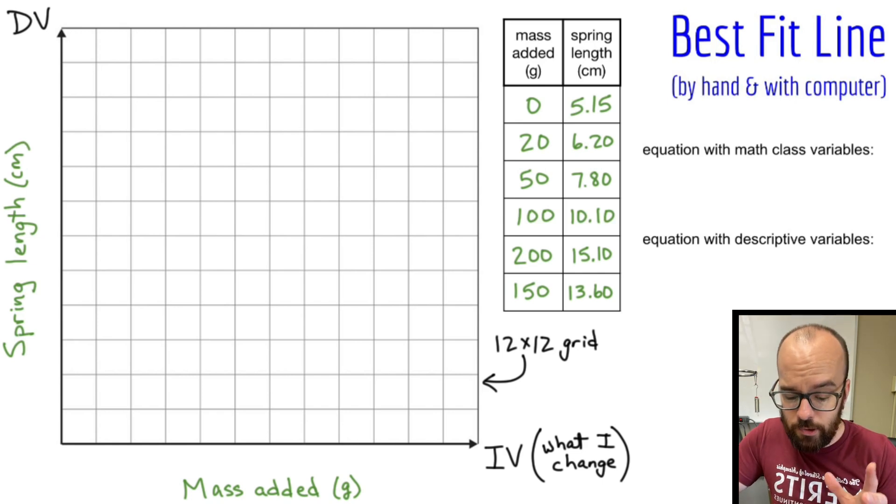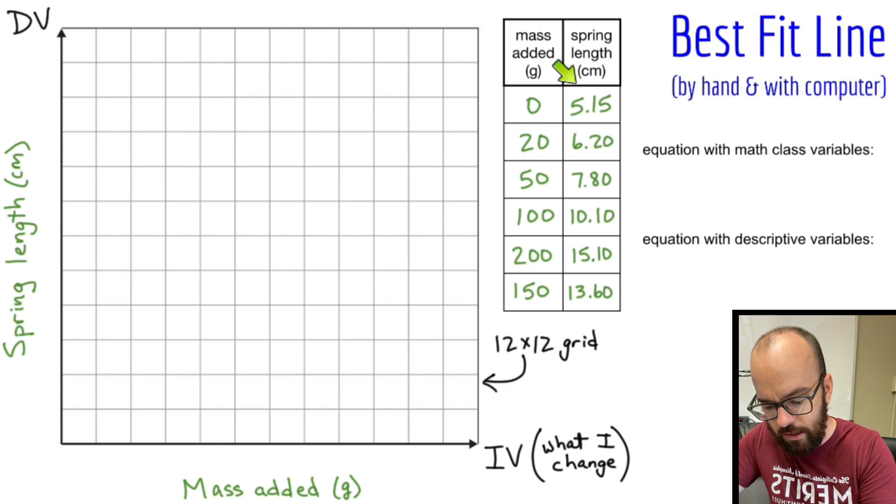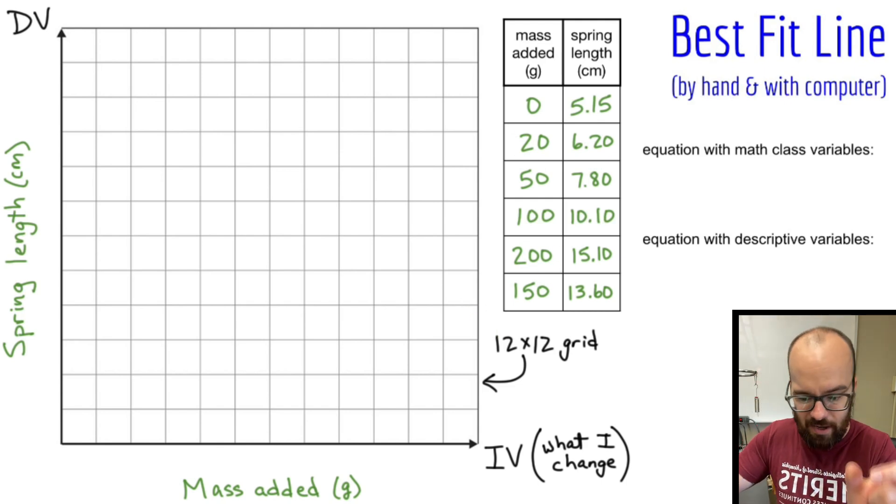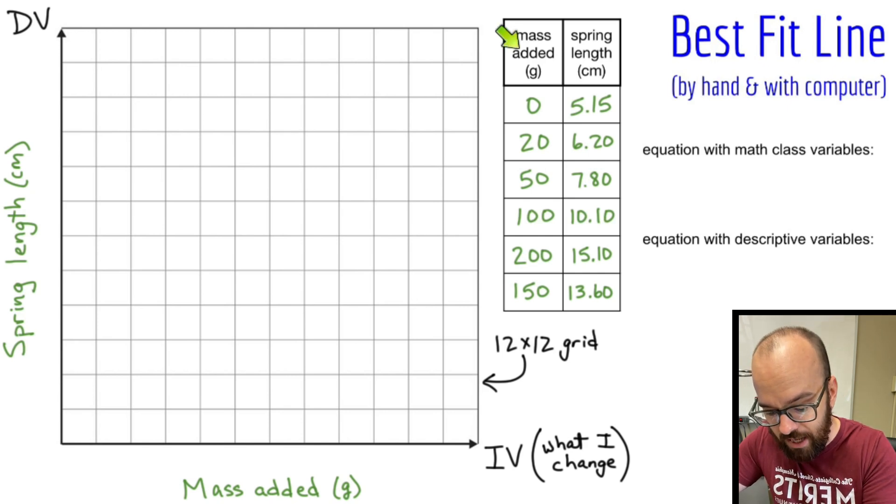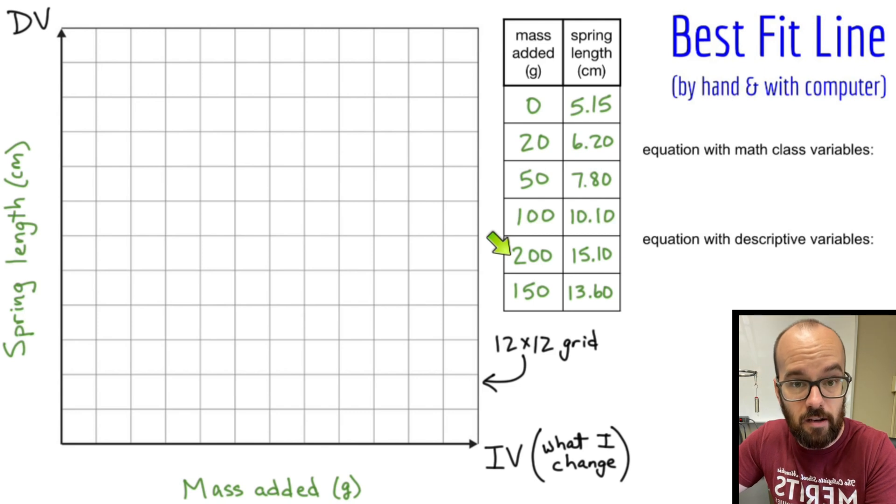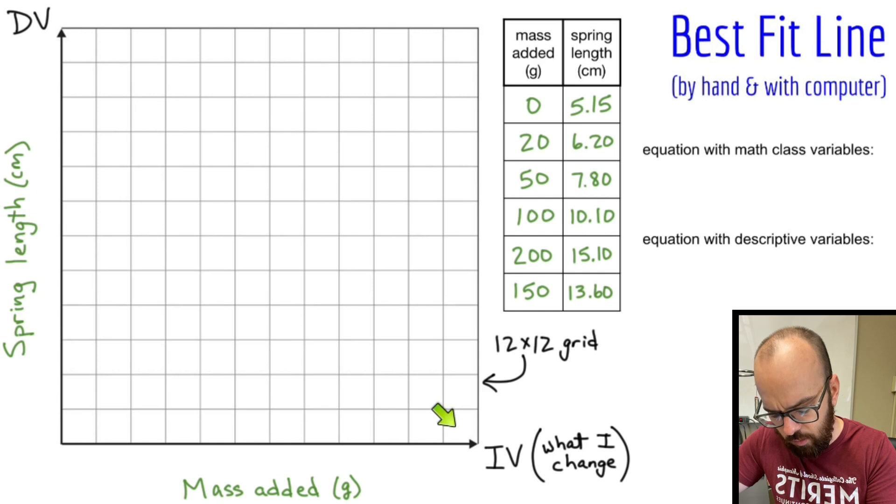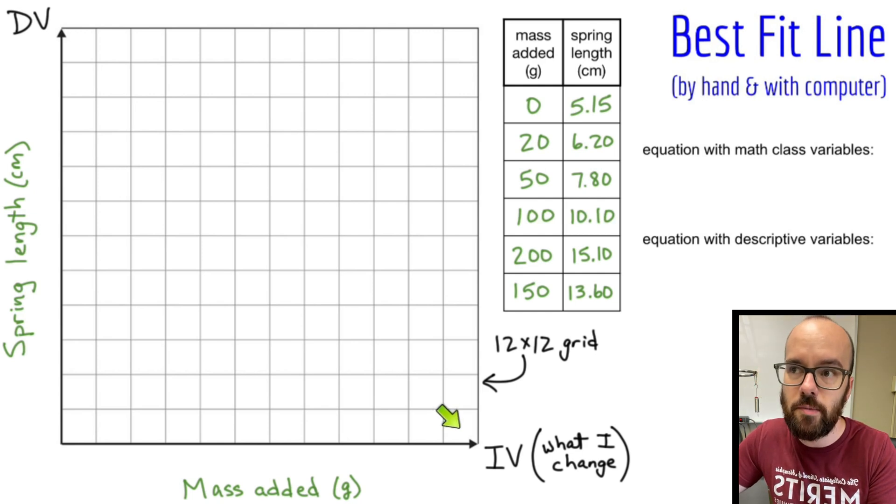The next part can be tricky. I've got to figure out how to spread out all of this data over my 12 by 12 grid. I need to figure out how much each box should be worth. I've got 12 boxes. The mass needs to get up to 200. If each box were worth 10, 12 times 10 would be 120, that wouldn't be enough.